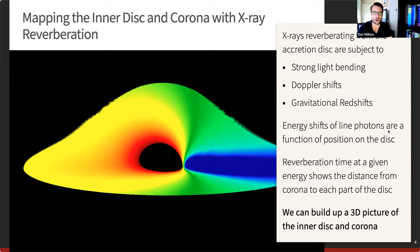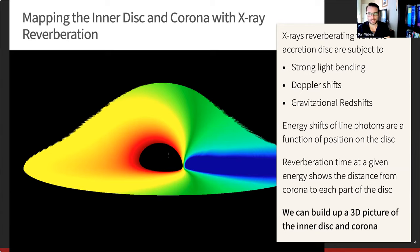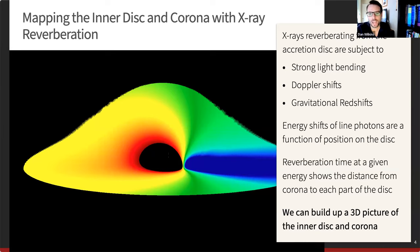The sales pitch for X-ray reverberation mapping is that the energy shifts are a function of position on the disk. If we have iron K line photons and can measure their energy shifts, that tells us whereabouts on the disk those photons were emitted from — even though for all but a couple of black holes that the Event Horizon Telescope can resolve, we can't actually resolve the accretion disk. We then combine the energy shift of those line photons with the reverberation time lag of the photons shifted to different energies. That reverberation time lag tells us how far each part of the disk is from the piece of the corona that illuminates it. Combining these two pieces of information lets us start to build up a three-dimensional picture of the inner disk, the corona, and the environment around the innermost stable orbit and event horizon.